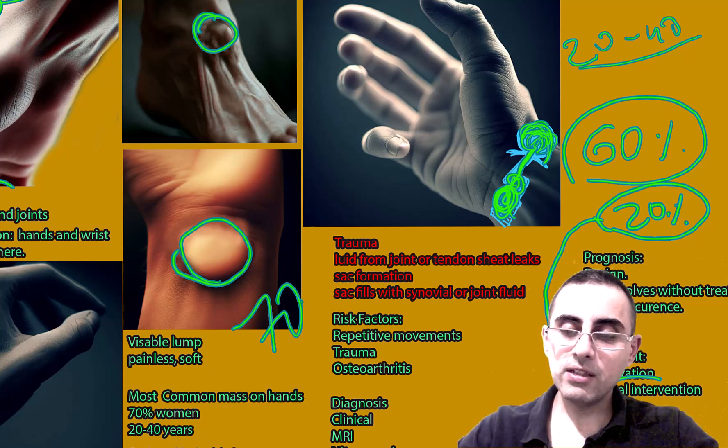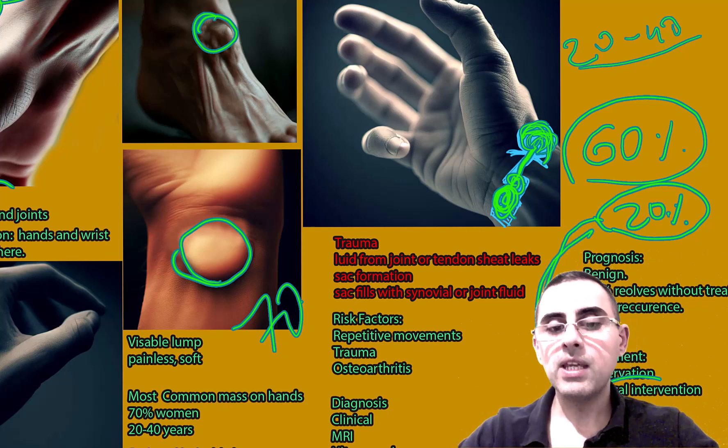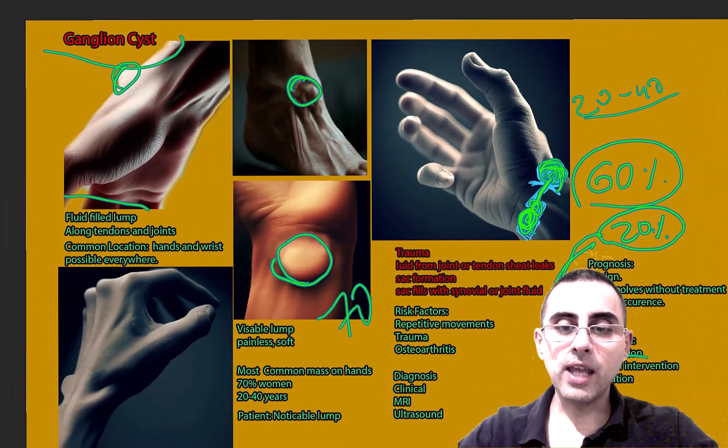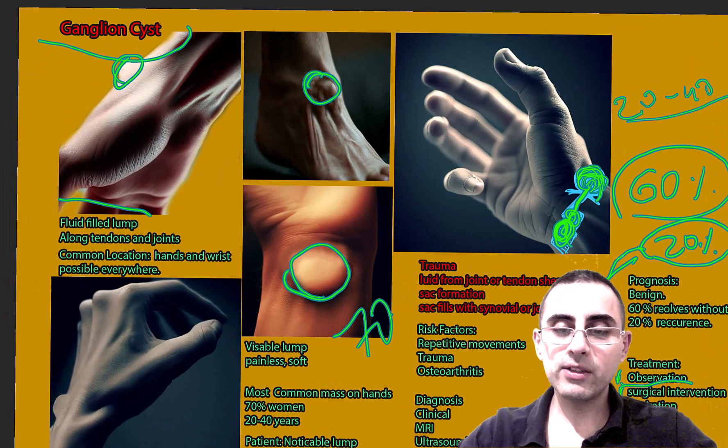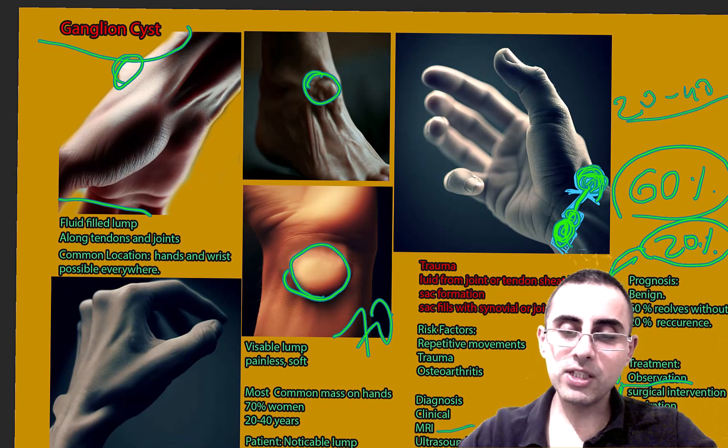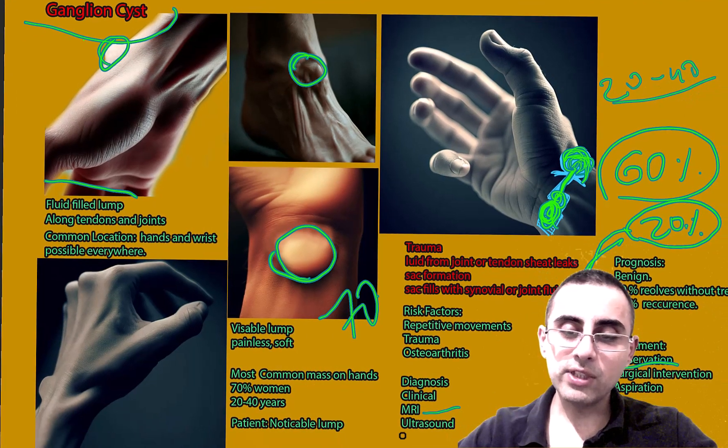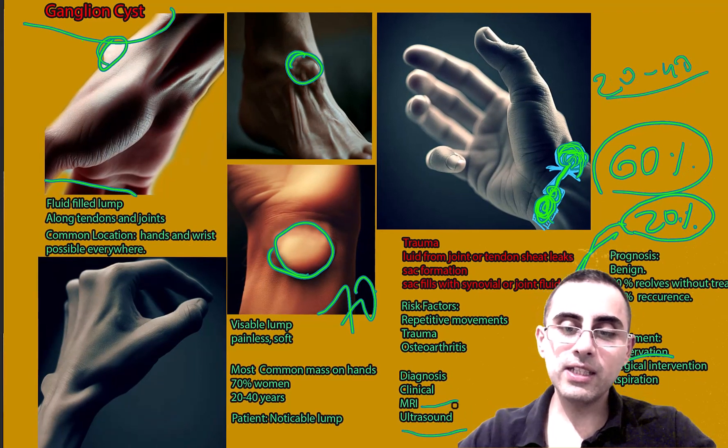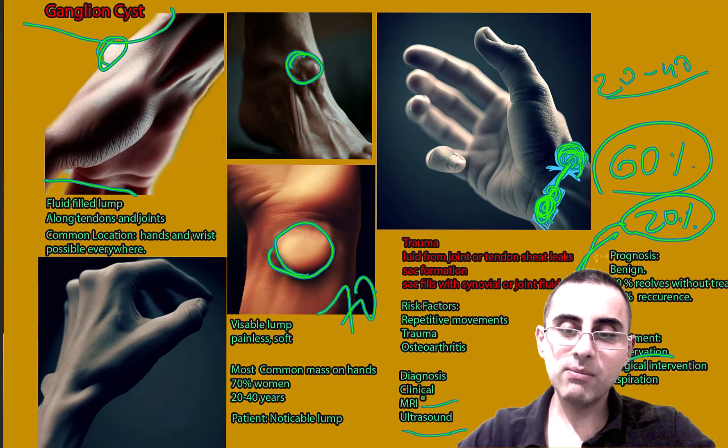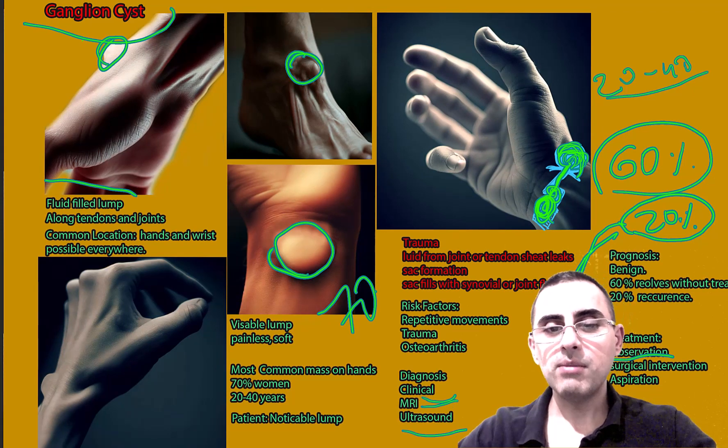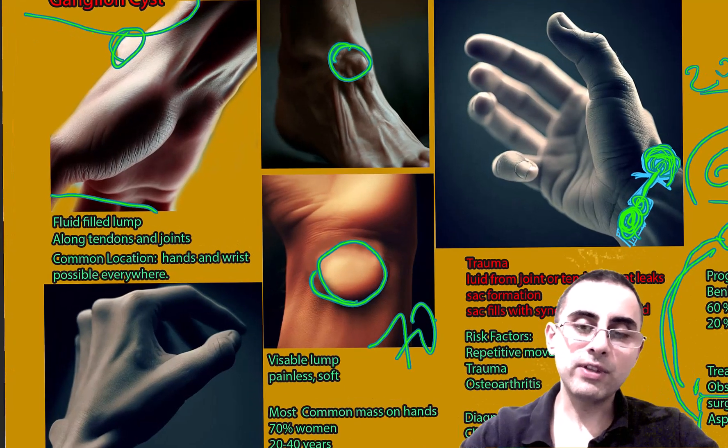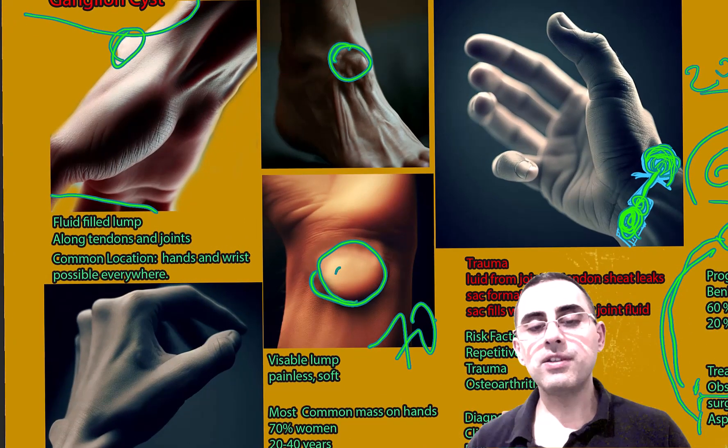Aspiration is also an option, but in case of aspiration, the recurrence rate is higher. The gold standard of diagnosis is magnetic resonance imaging, and ultrasound is a cheap alternative. Usually diagnosis is made by clinical picture because it has a classical clinical picture: a painless, soft lump on the wrist.